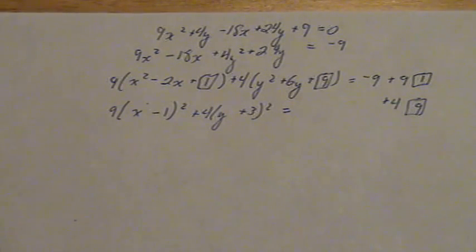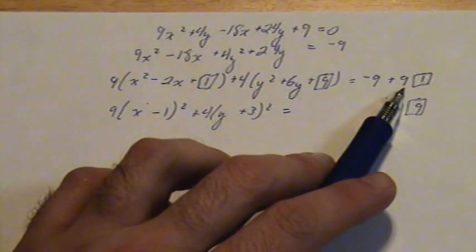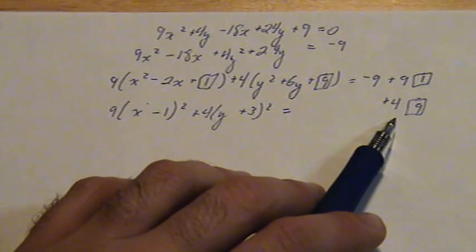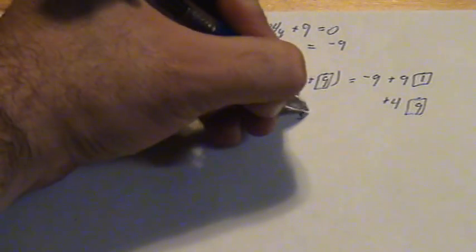Now this part can be done easily with our calculator. We have negative 9 plus 9 times 1 plus 4 times 9. And that comes out to 36.